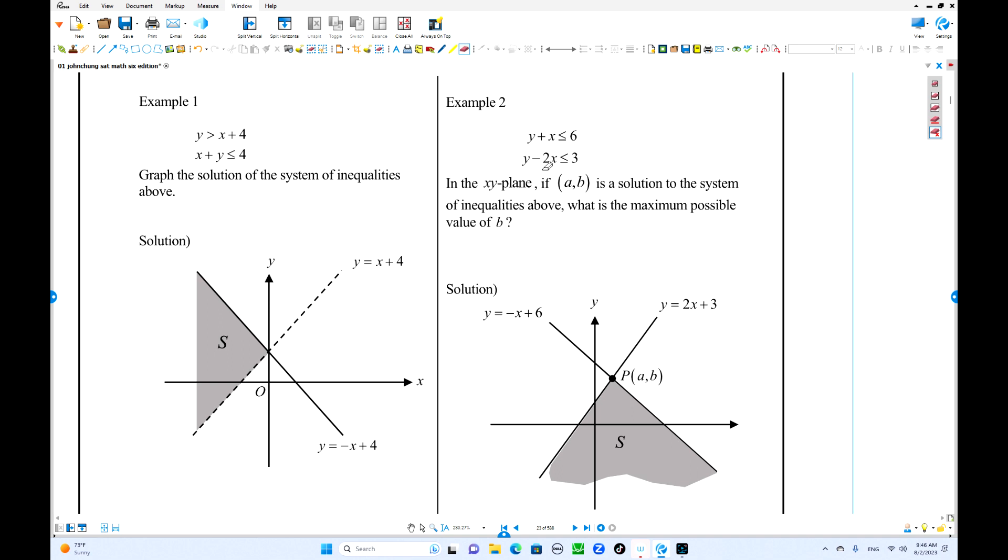We have two inequalities and if AB is a solution to the system of inequalities, what is the maximum value of B? The first things we have to check out, which region belongs to the solution set here, here, here or here. Using slope intercept form, this is y less than negative x plus 6, below the graph. The other one is y less than or equals 2x plus 3, still less than, below the graph here. So this is the solution set.